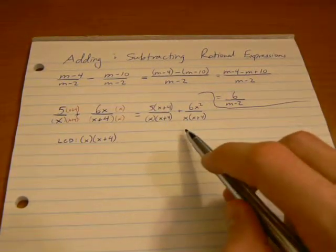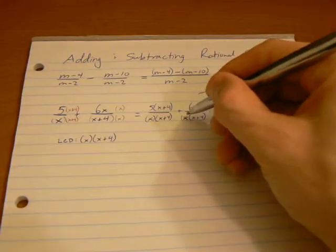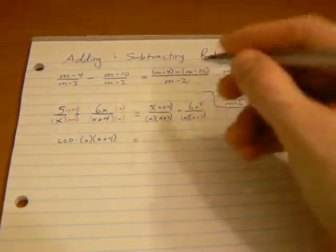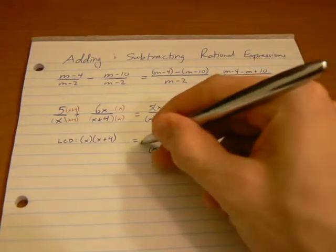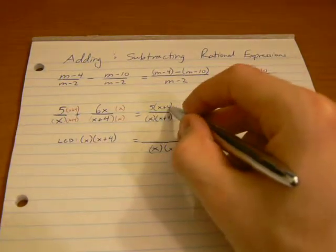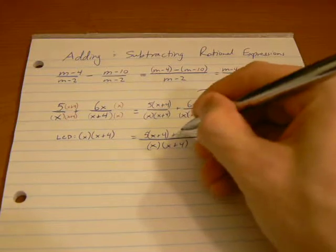So now we can do our addition. Basically, we've got common denominators. We should write down brackets to be consistent there. So putting the whole thing over x times x plus 4, we've got 5 times x plus 4 plus 6x squared.